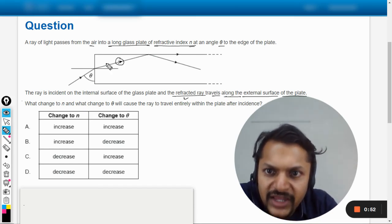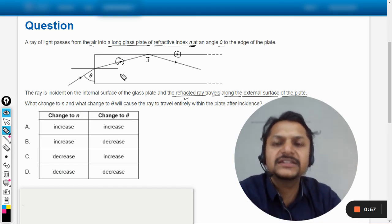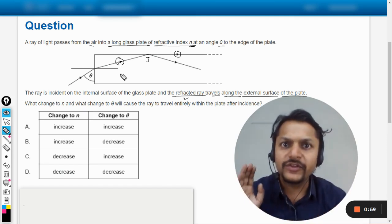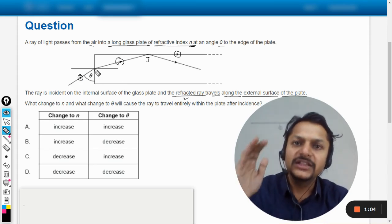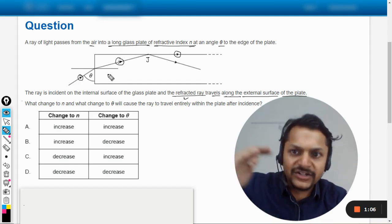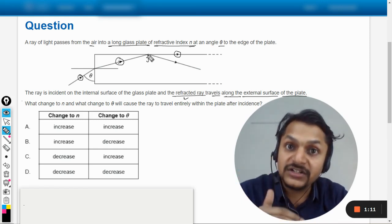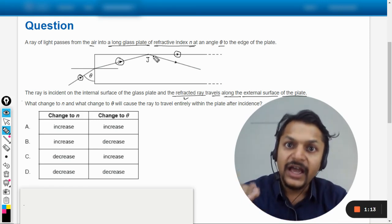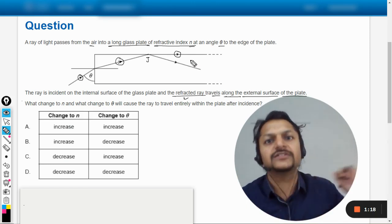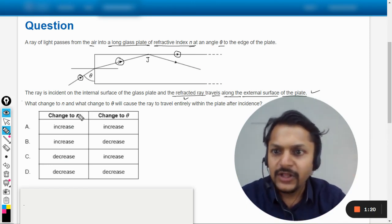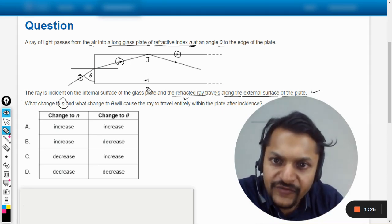So this ray is hitting at this junction, I'm just calling it j, and this is how the light travels. So the first part of the question says that the light is coming from the air, it hits the surface at angle theta, it enters into glass and then it moves like this. But later it hits the internal surface of the glass and then it moves parallel, it moves along the surface.